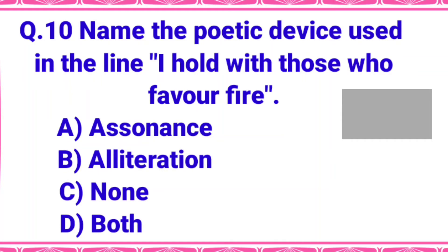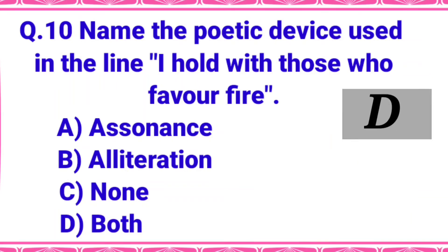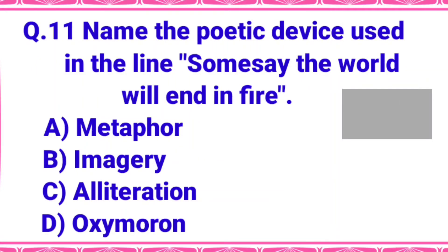Name the poetic device used in the line 'I hold with those who favor fire.' In this line, the vowel sound O is repeating - in 'hold', 'those', and 'who' - so due to the vowel O, there is assonance. Also in 'favor fire', the consonant F is repeating, so due to the consonant F, there is also alliteration. So this line contains both assonance and alliteration.